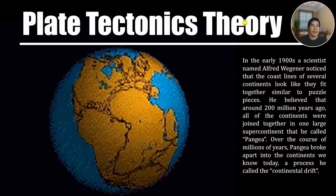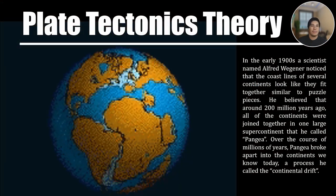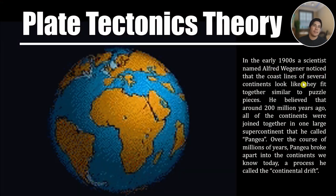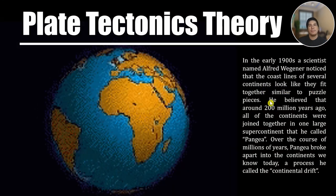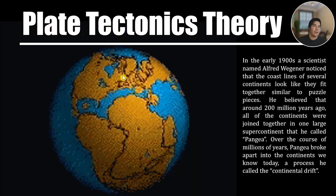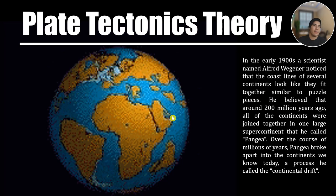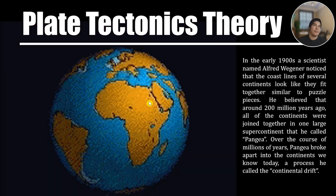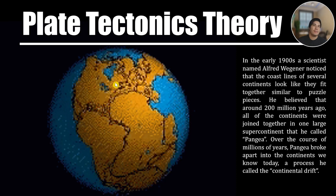The plate tectonic theory began in the early 1900s when scientist Alfred Wegener noticed that the coastlines of several continents looked like they fit together, similar to puzzle pieces. He believed that around 220 million years ago, all the continents were joined together in one large supercontinent called Pangaea. Over the course of millions of years, Pangaea broke apart into the continents we know today — a process he called continental drift.